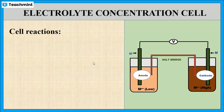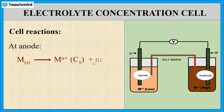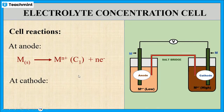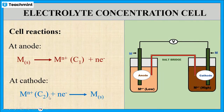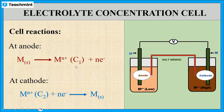Let us see the cell reactions. At the anode, the removal of electrons will take place — that means oxidation will take place at the anode. At the cathode, the higher concentration of the electrolyte, C2, is reduced to its metal form by the addition of electrons. So, reduction takes place at the cathode and oxidation takes place at the anode at lower concentration C1.